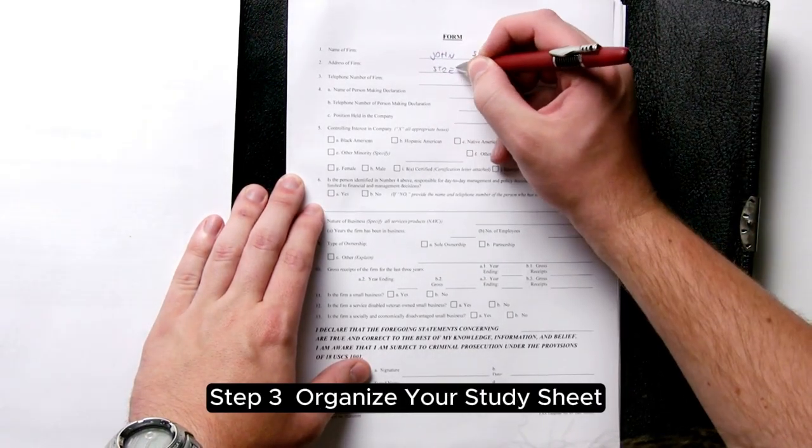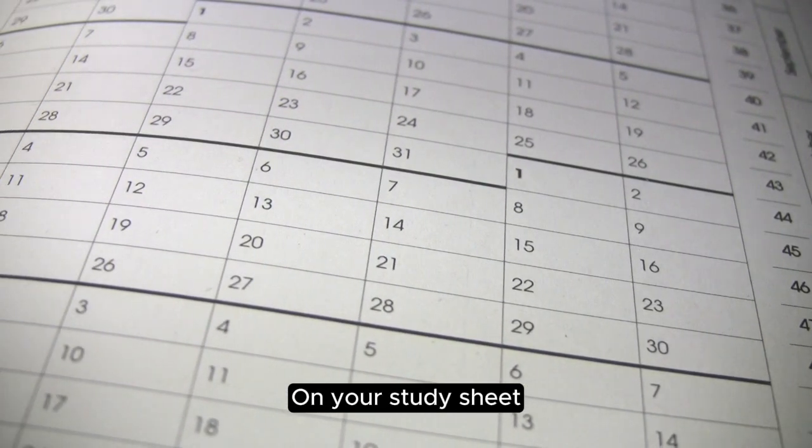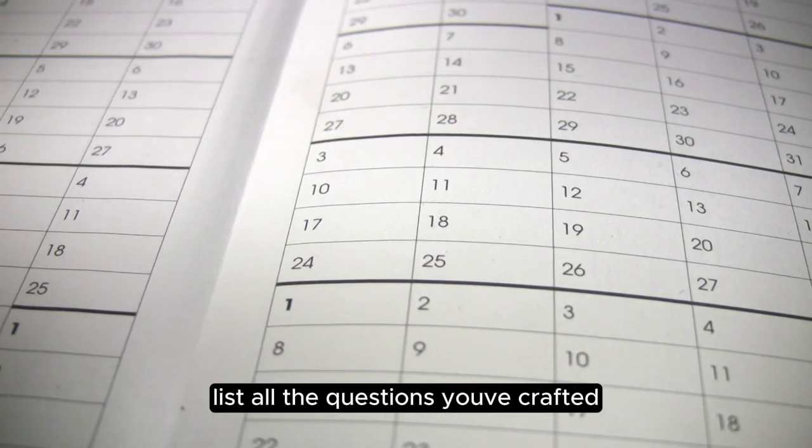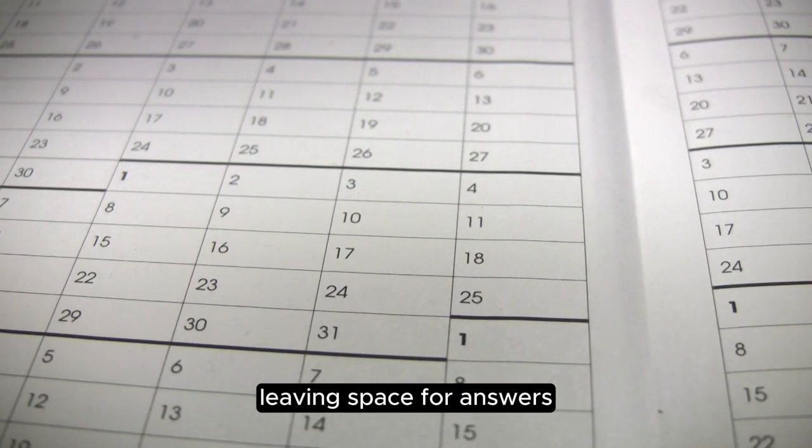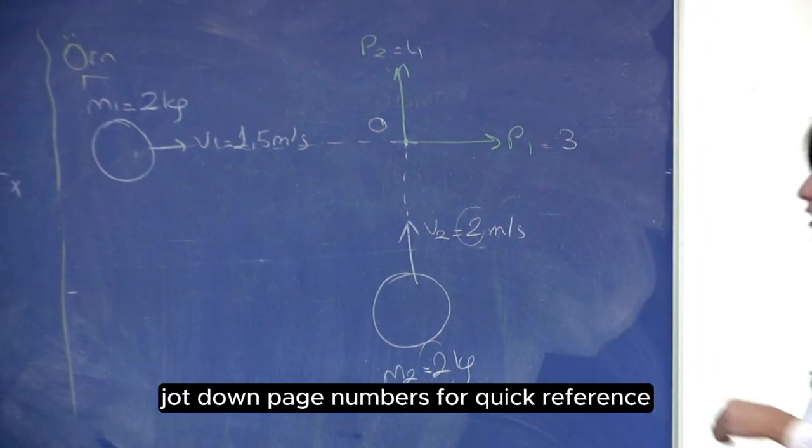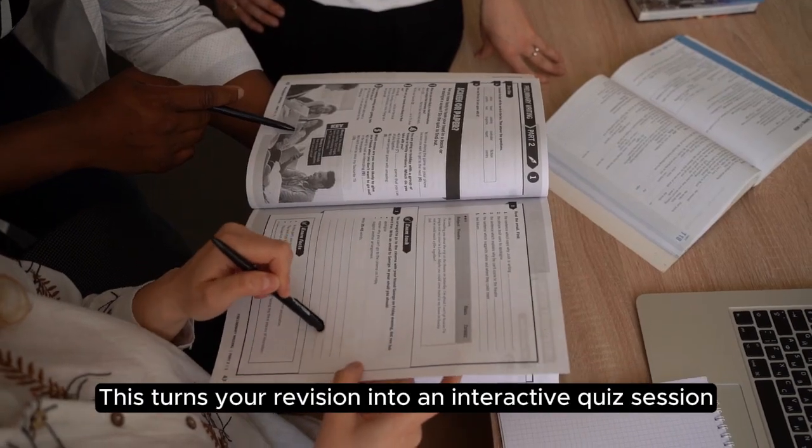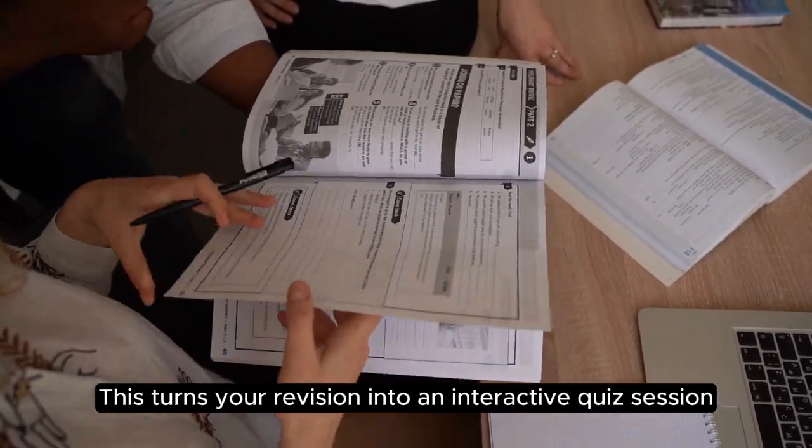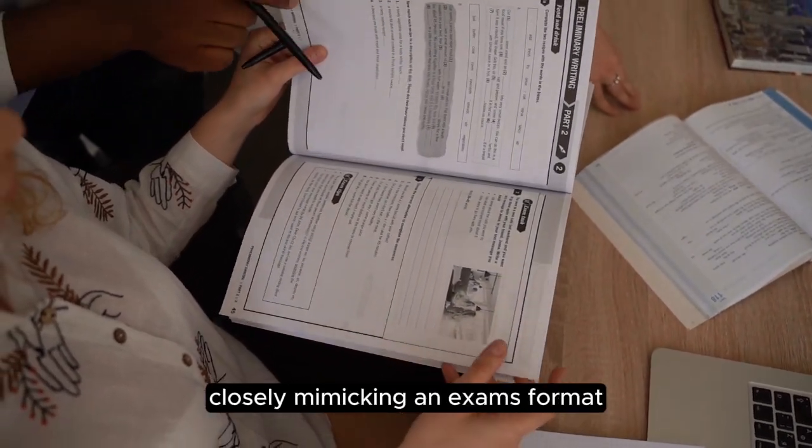Step 3: Organize your study sheet. On your study sheet, list all the questions you've crafted, leaving space for answers. Next to each question, jot down page numbers for quick reference. This turns your revision into an interactive quiz session, closely mimicking an exam's format.